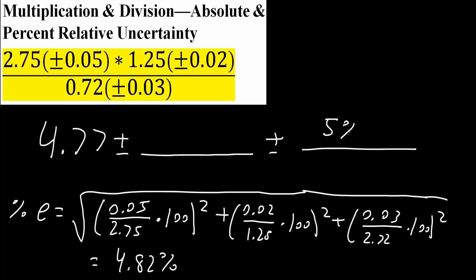So we'll write 5% down. Next, we will calculate the absolute uncertainty.